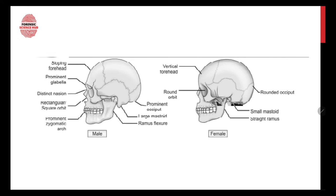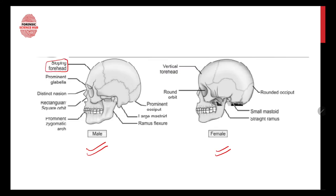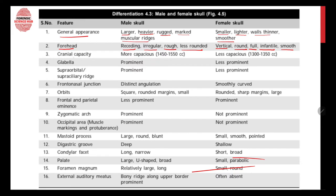Looking at the picture, the overall appearance of the male skull is larger than the female skull. Regarding the forehead, the male forehead is receding, irregular, rough, and less rounded, whereas the female forehead is vertical, round, full, infantile, and smooth. In the male skull you can see a sloping forehead area, whereas in the female the forehead is vertical.